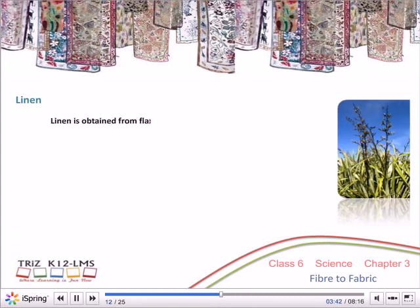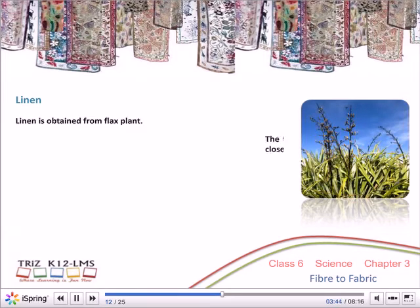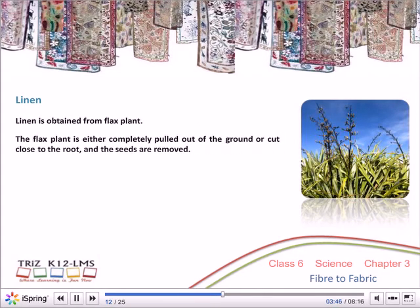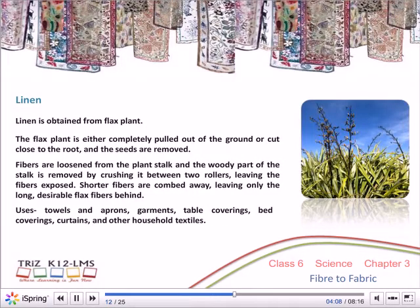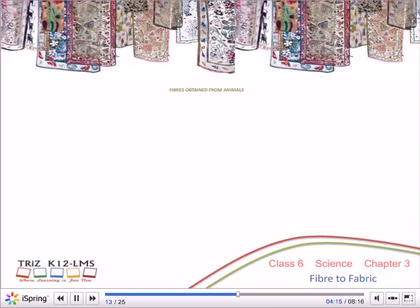Linen is obtained from the flax plant. The flax plant is either completely pulled out of the ground or cut close to the root, and the seeds are removed. Fibres are loosened from the plant stalk and the woody part is removed by crushing between two rollers, leaving the fibres exposed. Shorter fibres are combed away, leaving only the long, desirable flax fibres behind. Uses: towels, aprons, garments, table coverings, bed coverings, curtains and other household textiles.